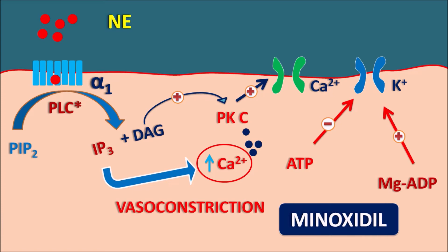Minoxidil acts like ADP — it stimulates the opening of potassium channels so that potassium flows outside. When these potassium channels open, the vascular smooth muscle is hyperpolarized, resulting in vasodilatation. Since these potassium channels are controlled by ATP, they are called ATP-sensitive potassium channels. Minoxidil therefore produces vasodilatation by activation of ATP-sensitive potassium channels.